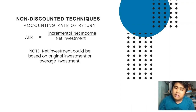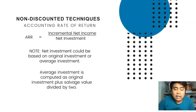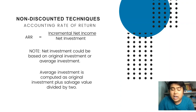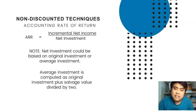Net investment could be original or average investment. If using original investment, the formula is as shown. But if based on average investment, the computation is: net investment plus salvage value, divided by 2. If the problem is silent on whether to use original or average, we follow the average investment assumption, because incremental net income is already an average amount.